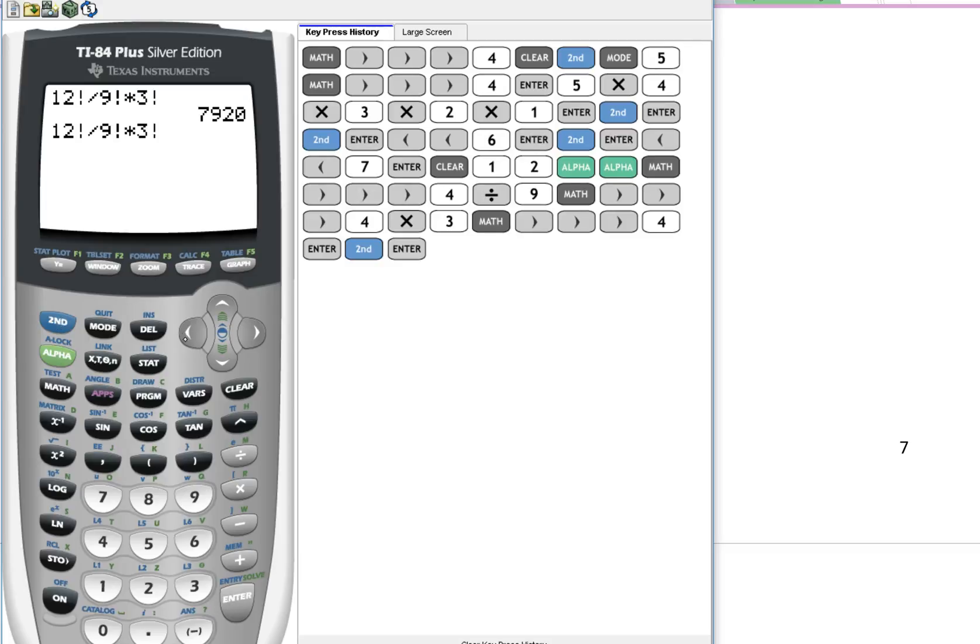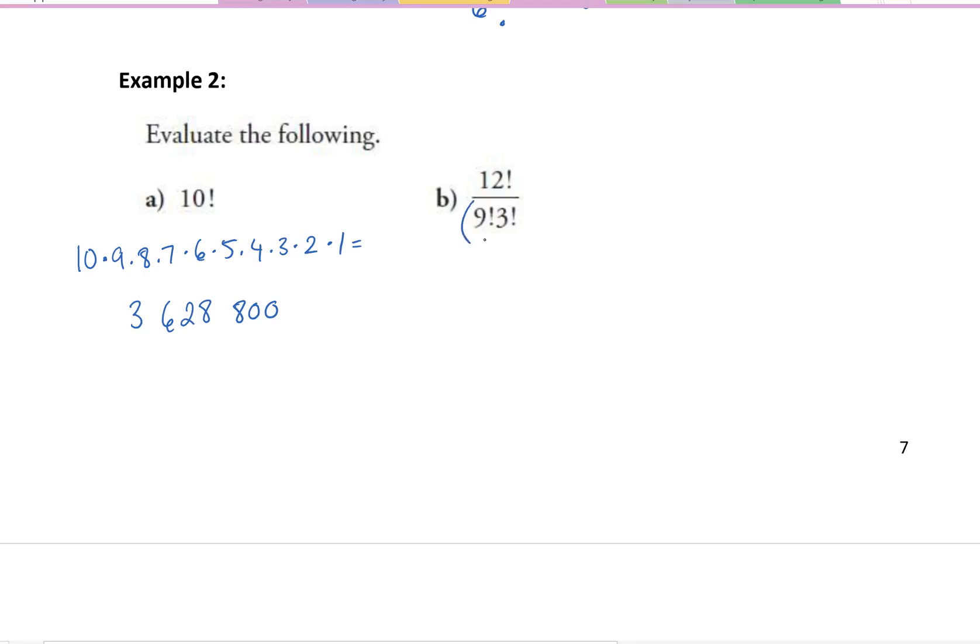So if I go second, enter and do this again, I'm going to go insert, and I'll put a bracket here, and then put a bracket at the end. And now I'm getting the answer I want. So make sure that you remember to put brackets around that denominator. And you'll get the answer of 220.